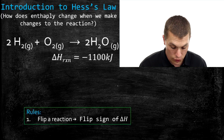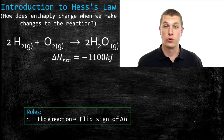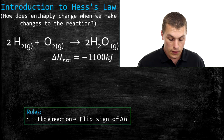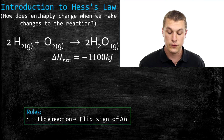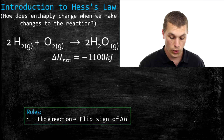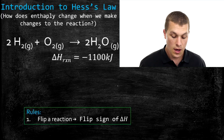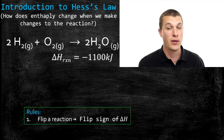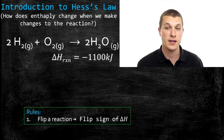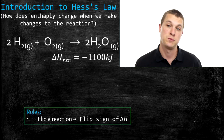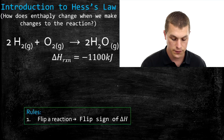Rule one says: flip a reaction, flip the sign of delta H. It means the manipulation we're going to do to the reaction is we're going to flip it, and how that changes our enthalpy is it changes the sign. So if it's negative, it goes to positive. If it's positive, it goes to negative.